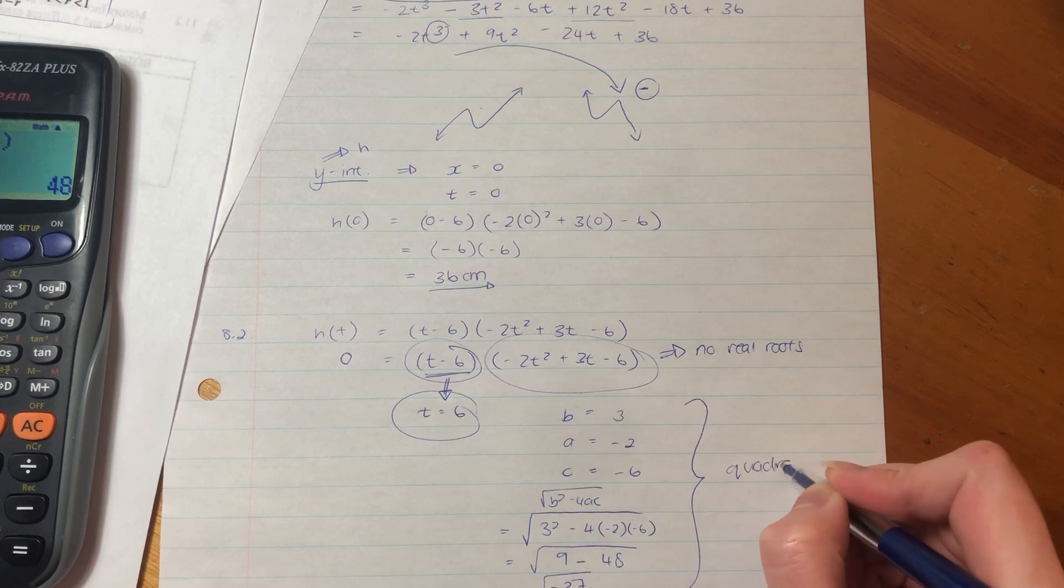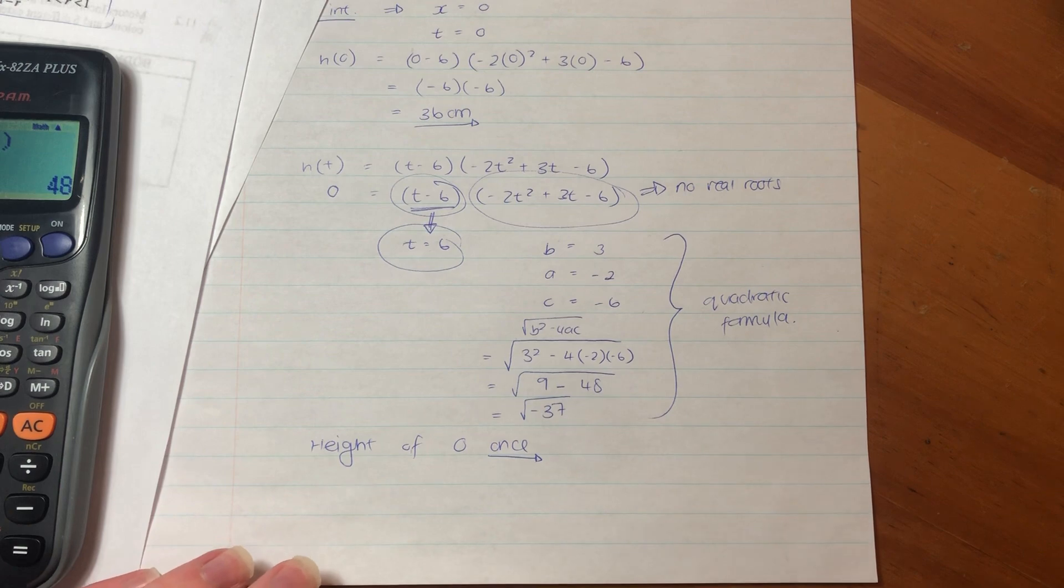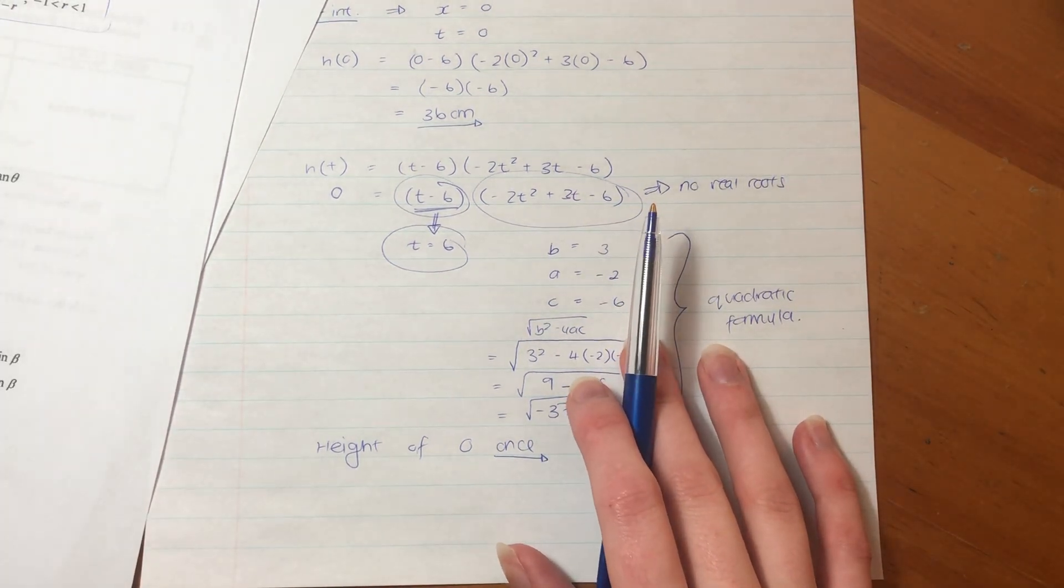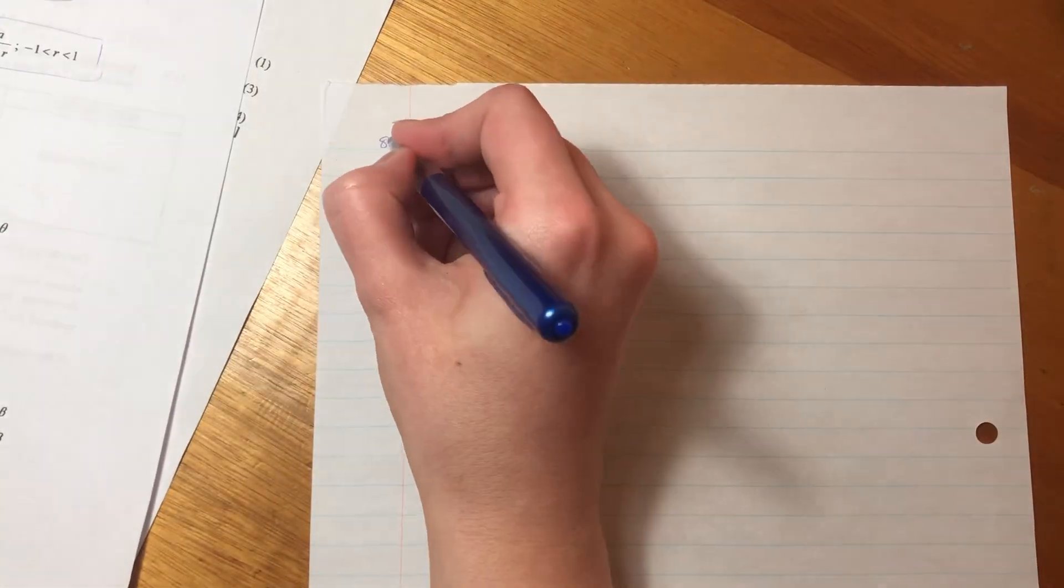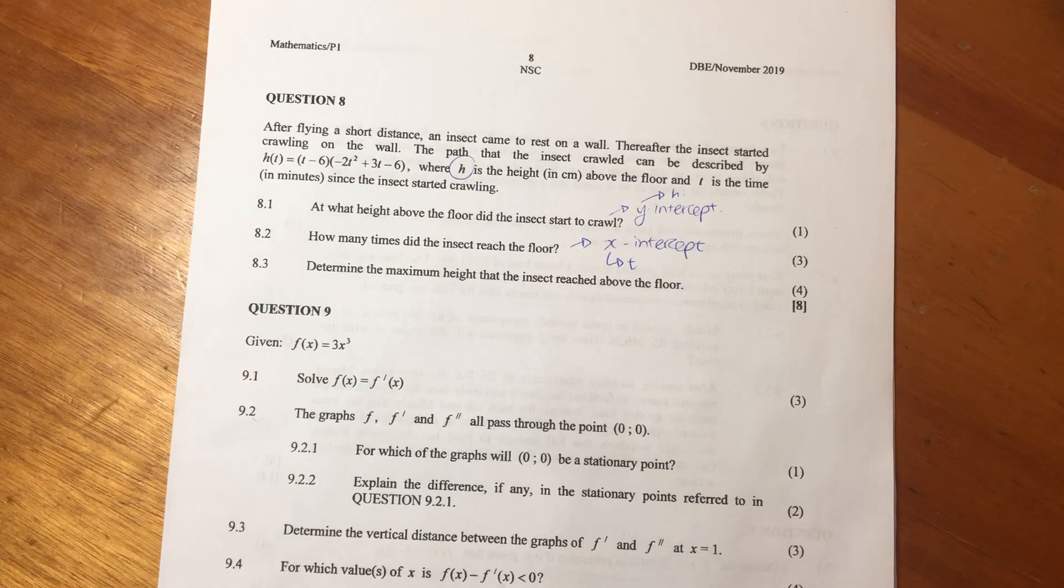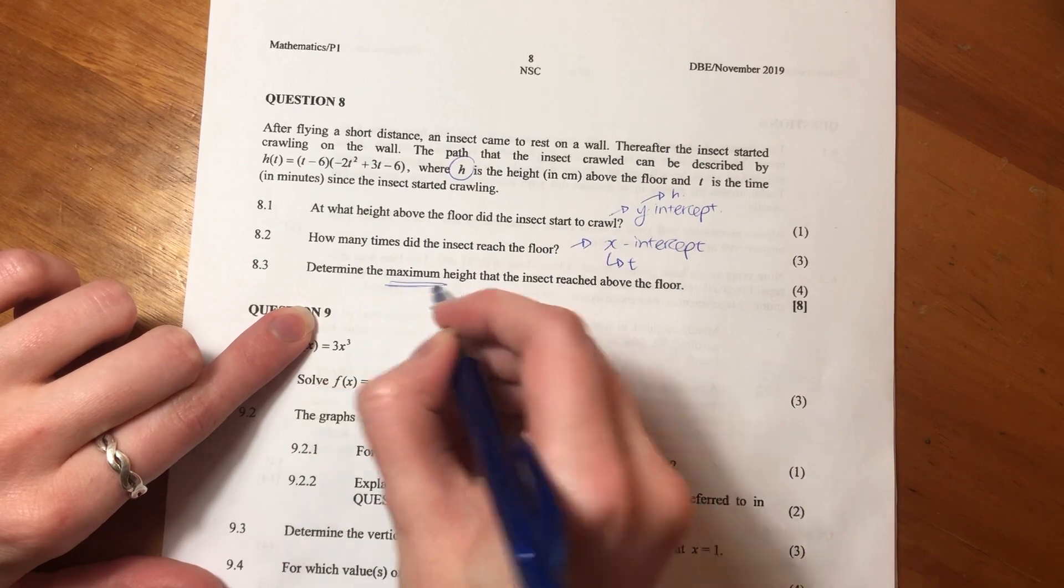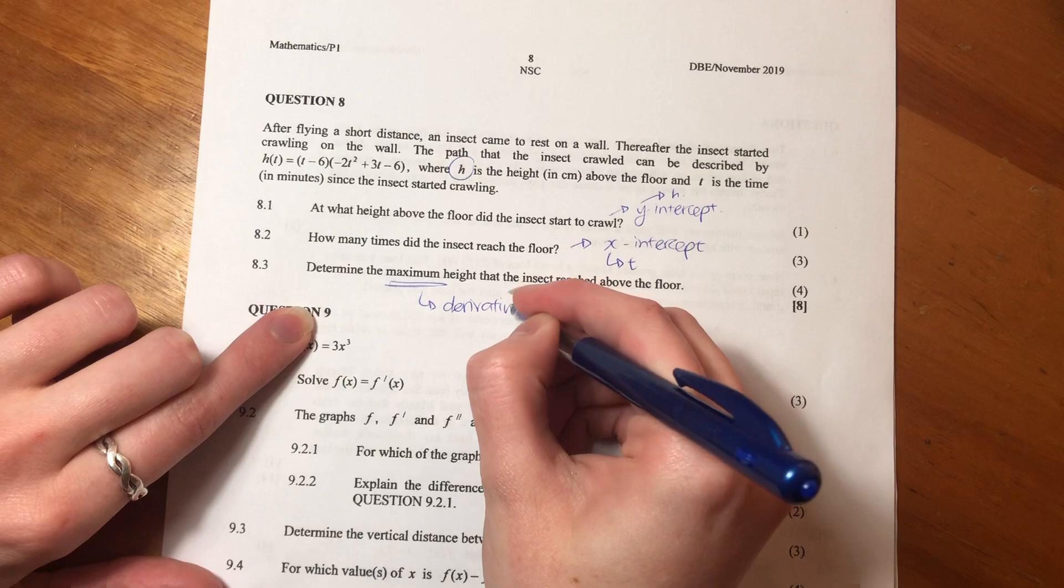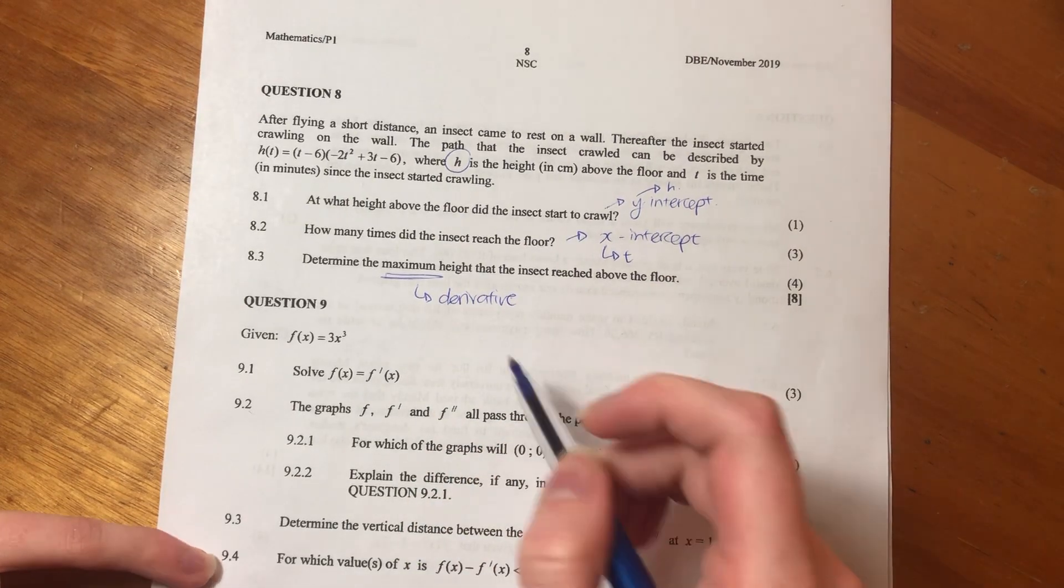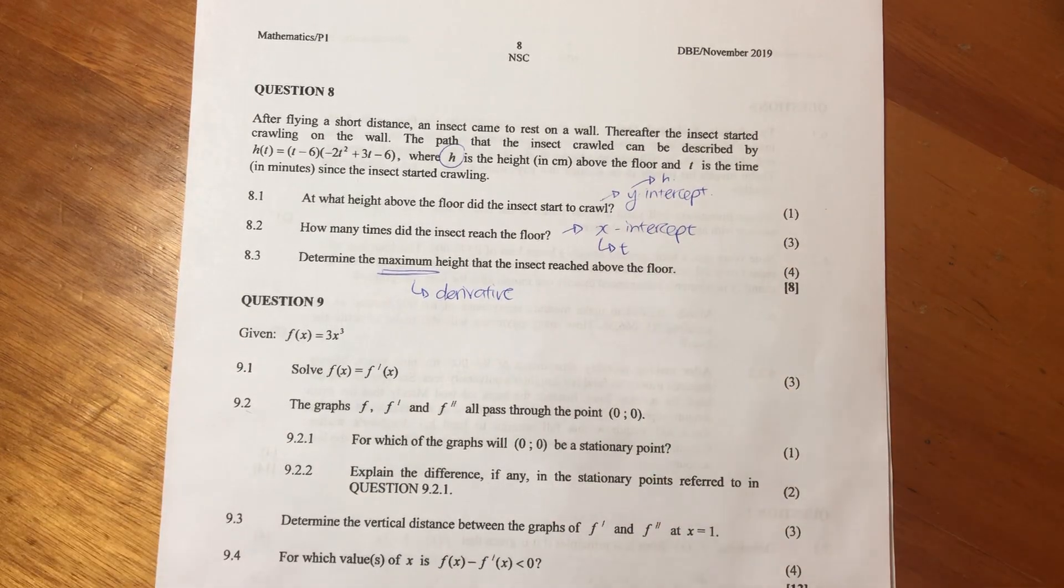So now we've done 8.1 and 8.2. Let's now go to the last question of eight, which is 8.3. So it says, determine the maximum height that the insect reached above the floor. Now, when you see things like maximum, you should be thinking derivative. And you could be saying, why am I starting to think derivative? When I say derivative, remember the derivative helps us find the turning points. Well, it helps us find the gradients in any point, but it also helps us find those turning points where that maximum and that minimum are.